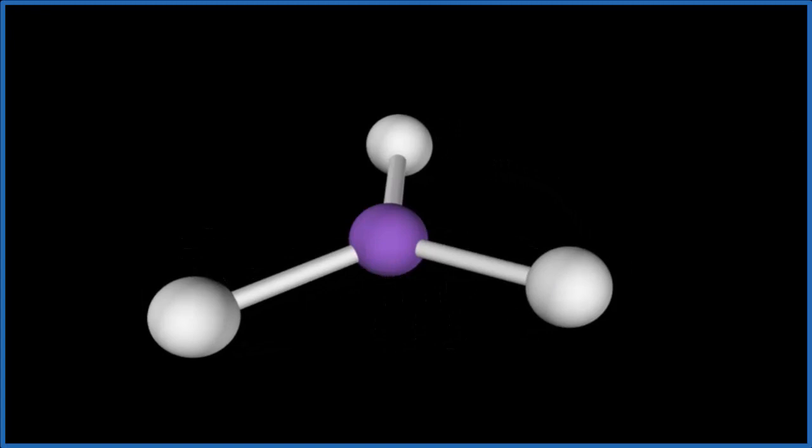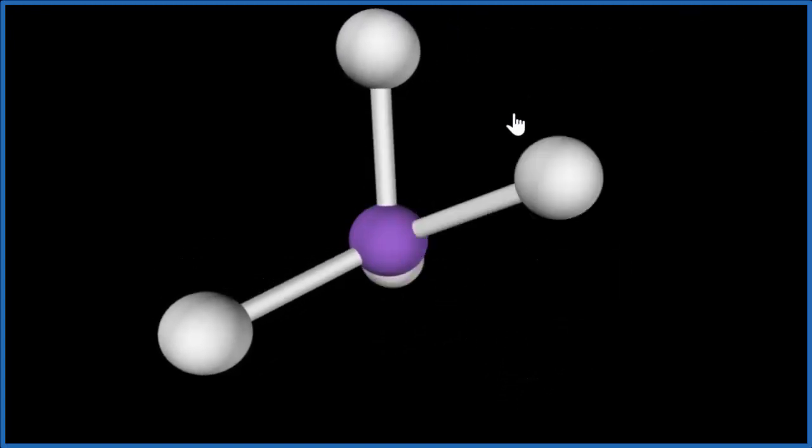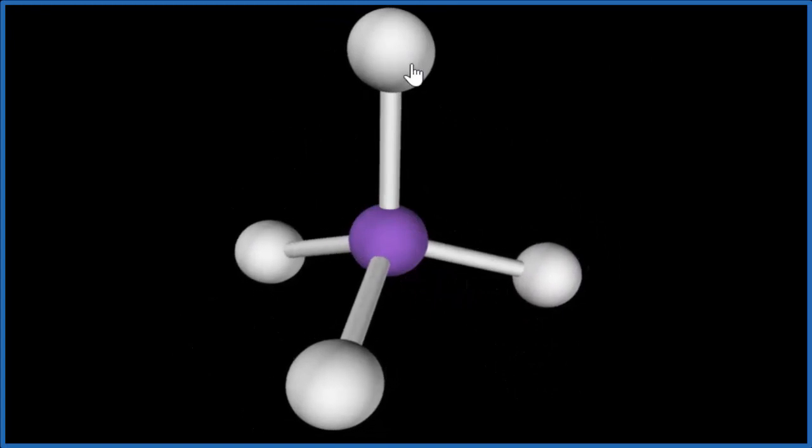And then we have that one chlorine atom. Let's add that. And now we end up with them all spread out as far away as they can from each other. We have what's called a tetrahedral molecular geometry.